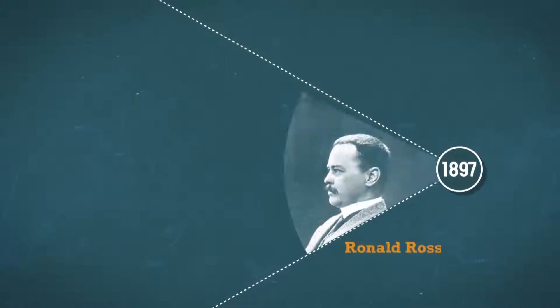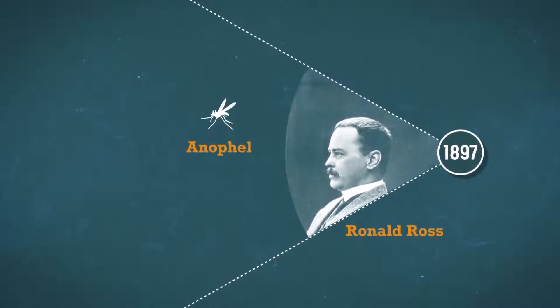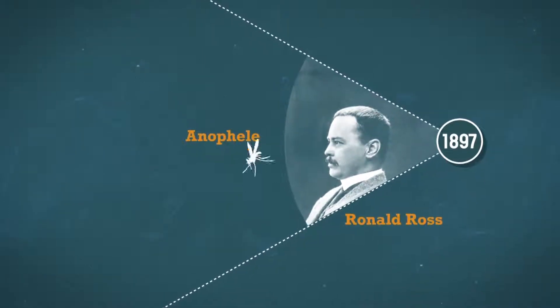In 1897, Englishman Ronald Ross also made a major breakthrough with his discovery of the Anopheles mosquito, which transmits the parasite to humans.